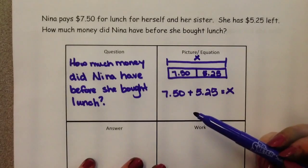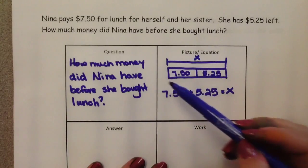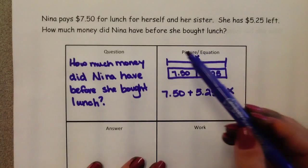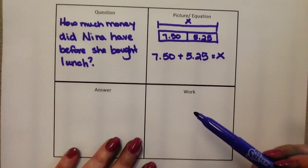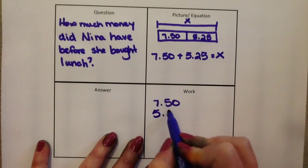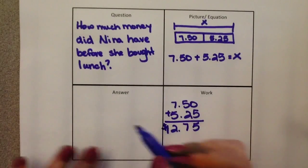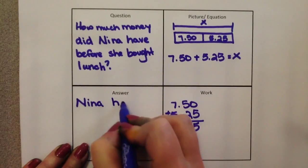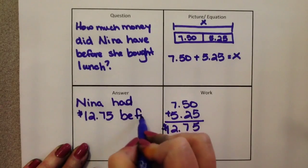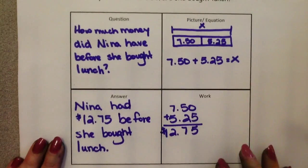Now some parents — and I do too — just tell themselves that all we need to do is add. That's great, and that is exactly what the children are doing. But some children need this little picture; it brings it together and clicks for them. So we come down here and do our work: we add $7.50 and $5.25 and we get $12.75. Then our last step is to write out the answer: Nina had $12.75 before she bought lunch. And that's how the graphic organizer works.